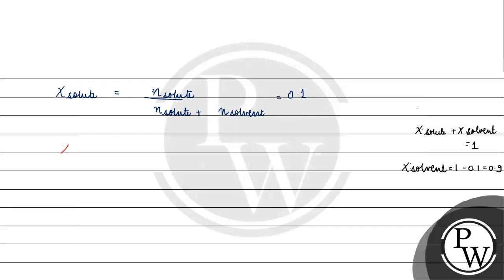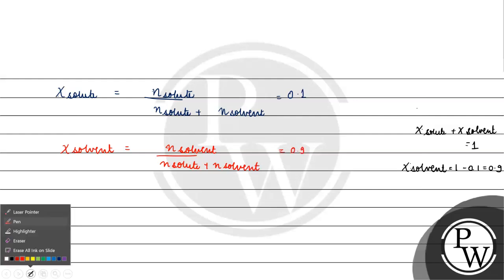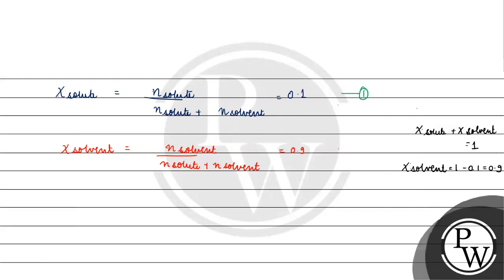Mole fraction of solvent is basically equal to number of moles of solvent divided by number of moles of solute plus number of moles of solvent, which equals 0.9. Dividing the two equations, mole fraction of solute by mole fraction of solvent equals number of moles of solute by number of moles of solvent, which equals 0.1 by 0.9.